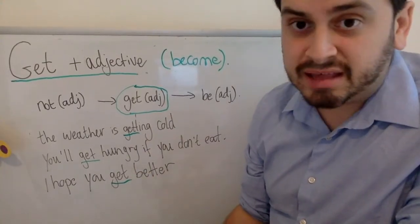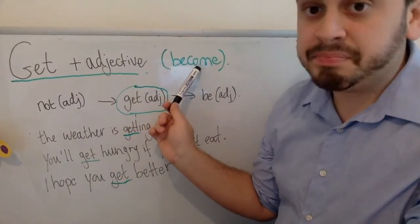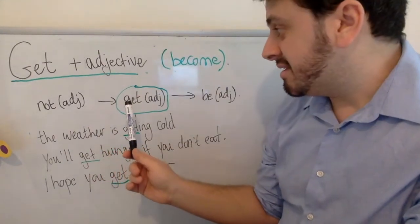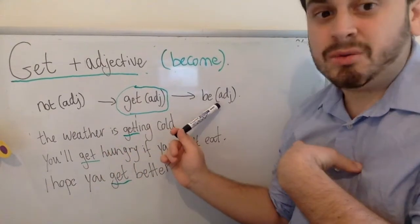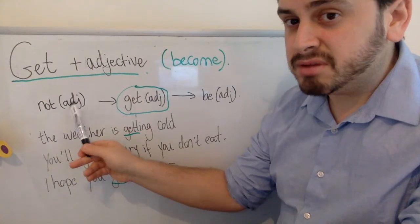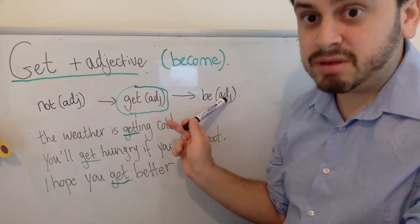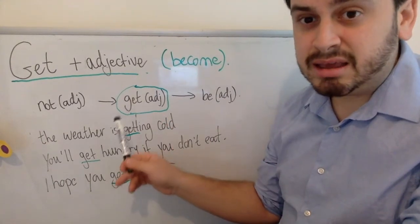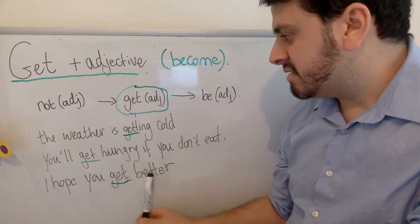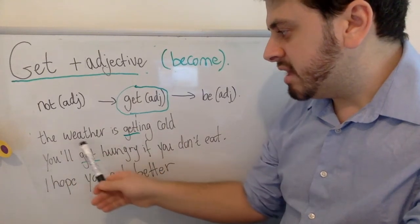The second way we use 'get' is with an adjective, and when we use 'get' with an adjective it means 'to become.' Initially you are not the adjective, then you get the adjective, and then you are the adjective. For example, before you get hungry you are not hungry. Here are some example sentences: 'get cold,' 'get hungry,' 'get better.' The first says: 'The weather is getting cold.'